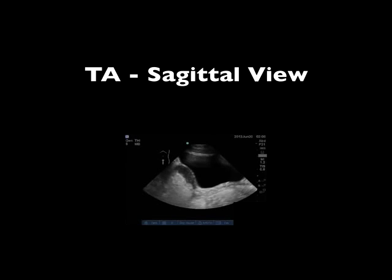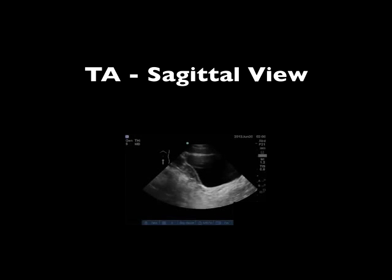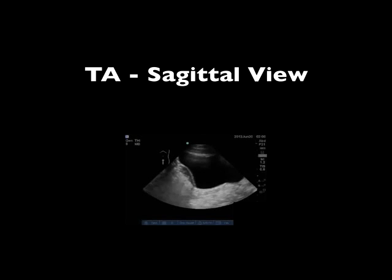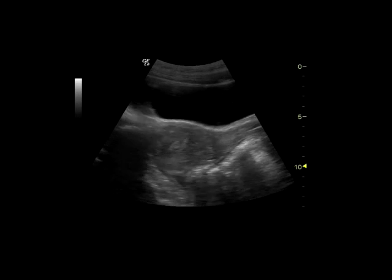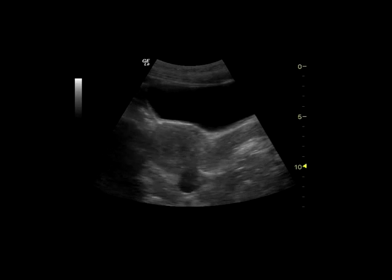Here is a video of a transabdominal scan. We can see an anechoic structure on the superficial and right side of the screen which is the bladder, and just posterior to that we see the uterus. The probe marker is pointed towards the patient's head. Remember that free fluid will collect posteriorly on the sagittal plane in the pouch of Douglas. This can happen during ectopic pregnancy, or in the traumatic setting it can be blood. This scan shows the uterus posterior to the bladder and a small amount of free fluid posterior to the uterus.